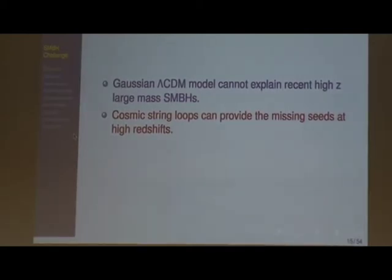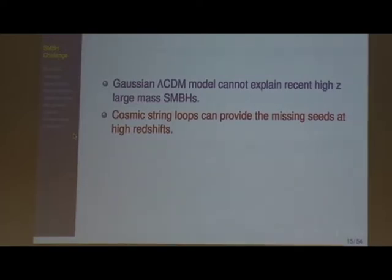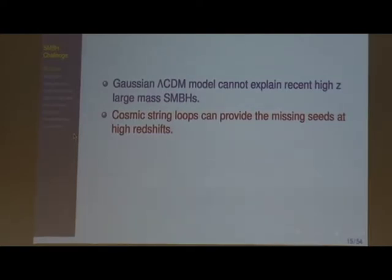A question is raised about a simpler solution: super-Eddington accretion. The accretion formula is a very simplified model, and there are many ways to have matter falling faster into a black hole — for instance, dark matter falling in would have no radiation pressure, so you could accrete as fast as you want. The response is that what this effectively does is make the efficiency factor λ much larger than one, but you have to show that actually works. The cosmic string solution is considered simpler because it doesn't require complicated accretion physics.